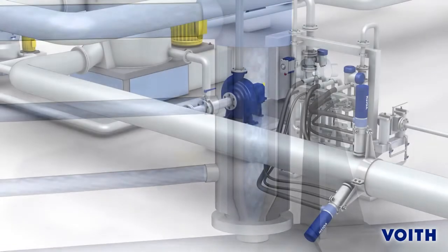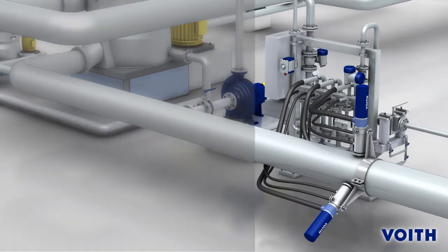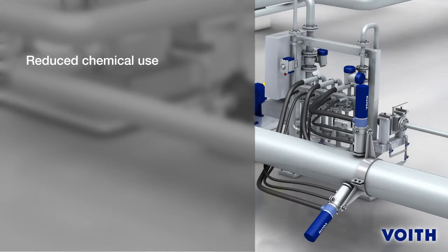Voith's Flojek dosing system allows paper to be produced in an environmentally compatible manner and offers a wealth of advantages. Reduced chemical use thanks to efficient dosing and much higher concentrations. Fresh water use can be reduced to a minimum.